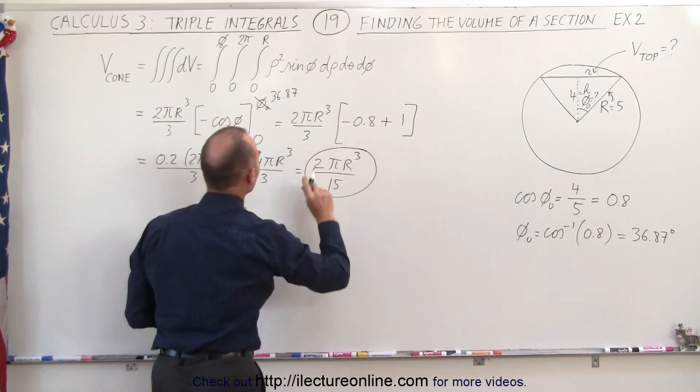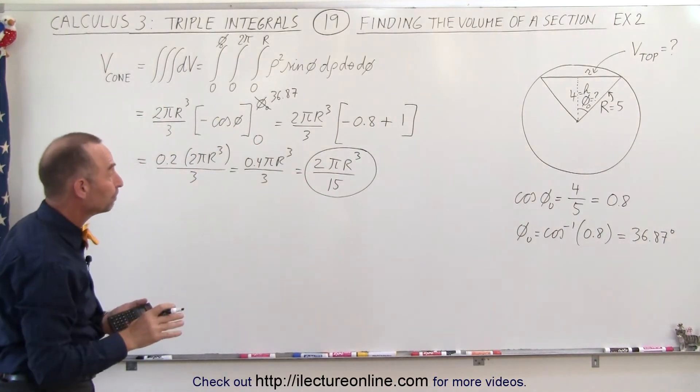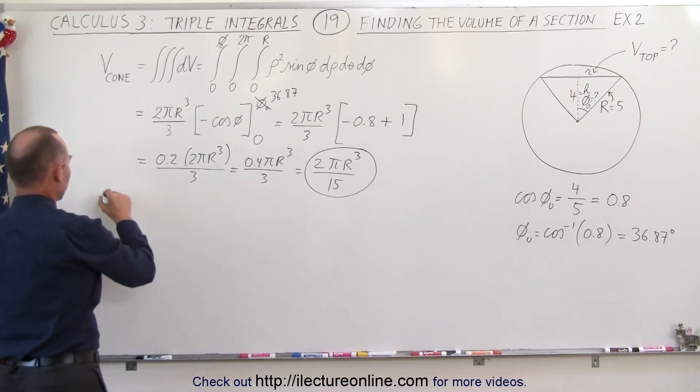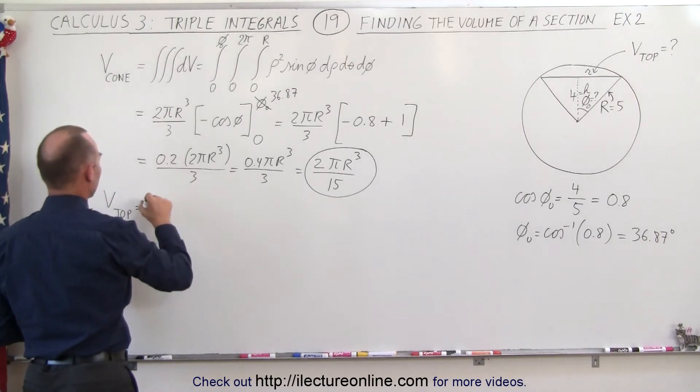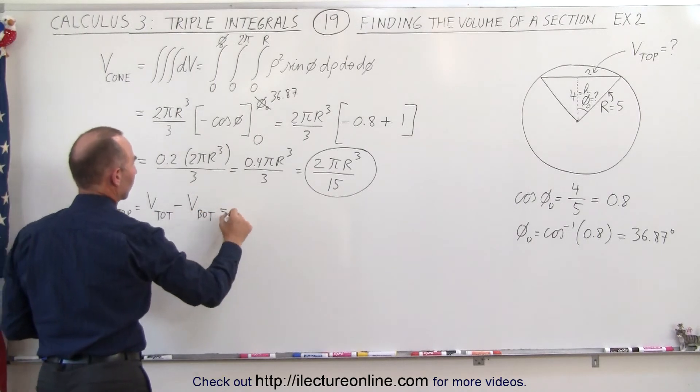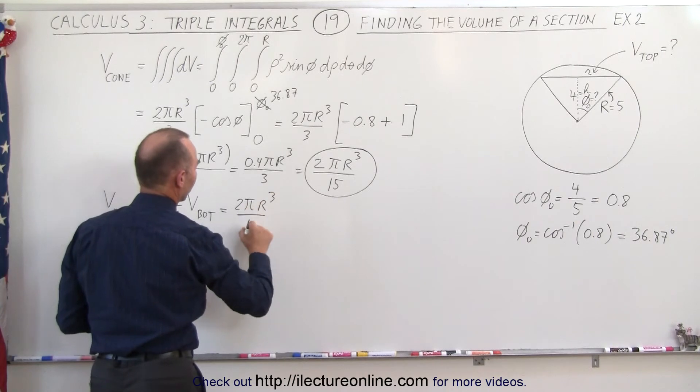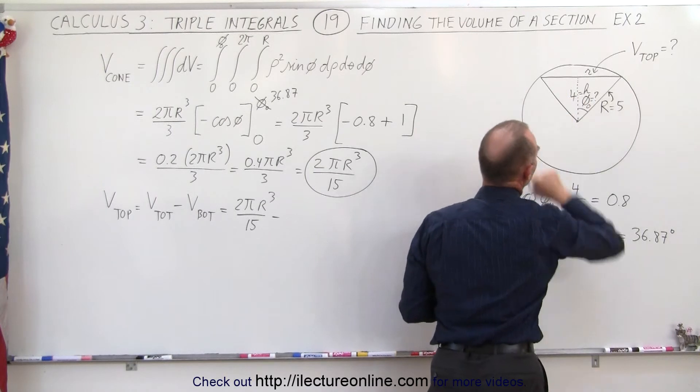Which is going to be the volume of the total cone. That's not yet the volume of that portion at the top. So the volume at the top is equal to the total volume minus the volume of the bottom portion. So what's equal to 2πr³/15 minus, now we've got to calculate the volume of this right here.